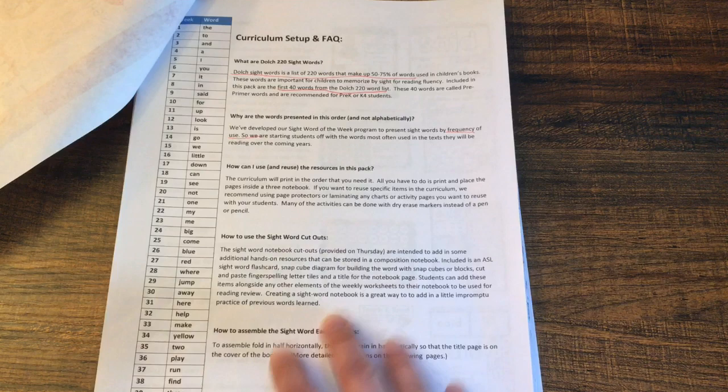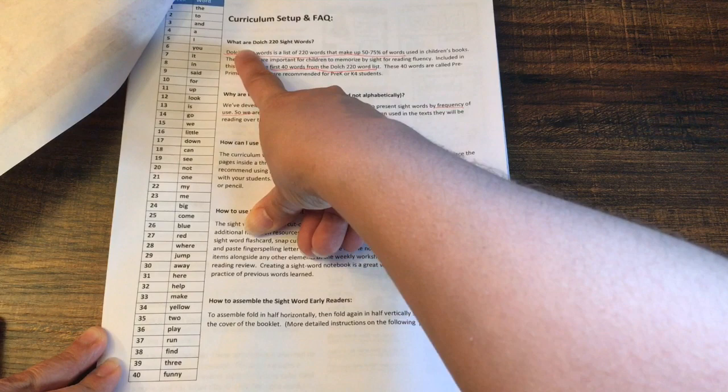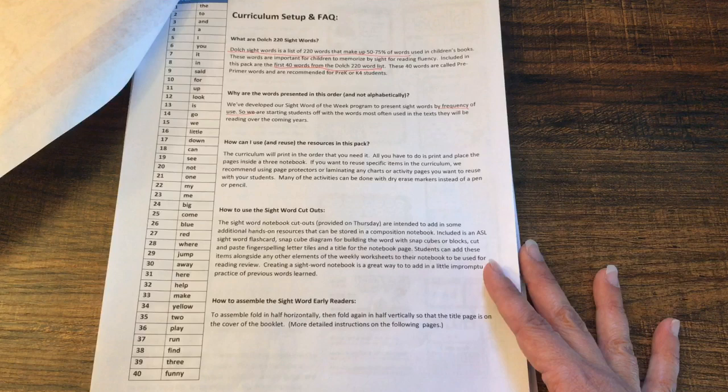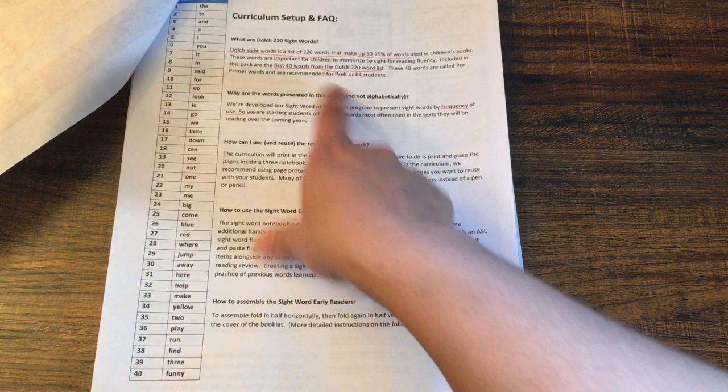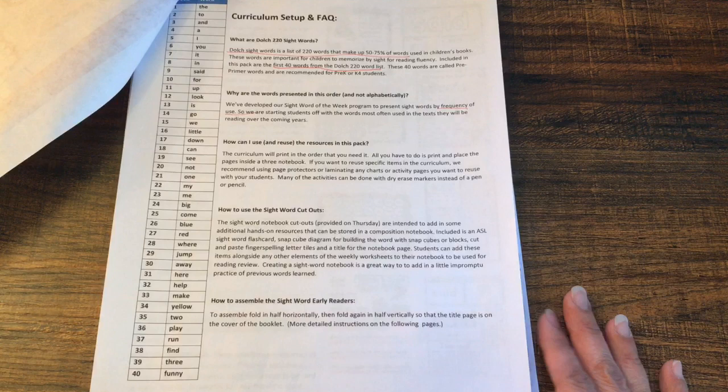This is a 40-week program and this is the list of all the words that your student is going to be learning. It tells you what are those 220 sight words, why are sight words important for children when they're learning how to read, and why are the words presented in this order and not alphabetically. One of the reasons they do that, they want to show how frequent they are presented in use. So that's why they're not in alphabetical order.